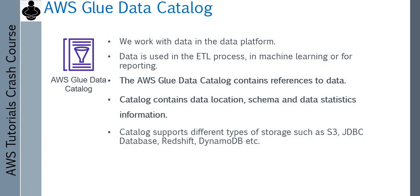So what exactly is AWS Glue Data Catalog? When you build a data platform, you work with data and your data is stored in various types of locations. It could be object storage in S3, or some kind of relational database inside a JDBC database, or you can have a warehouse solution like Redshift, or you can have a NoSQL type of data sitting inside a DynamoDB kind of service.